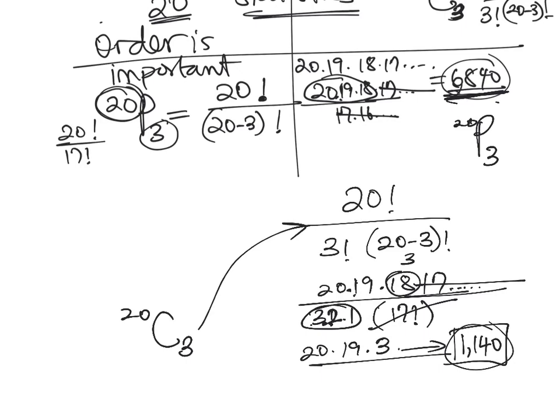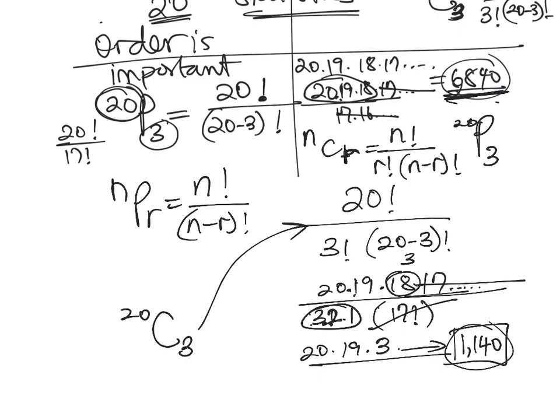nPr is n factorial divided by n minus r factorial. So that's for permutation. While nCr is n factorial divided by r factorial into n minus r factorial.